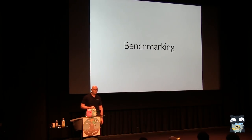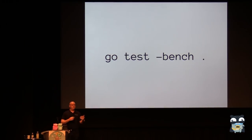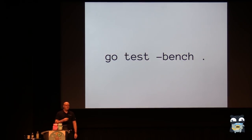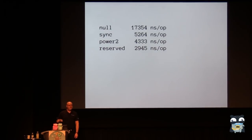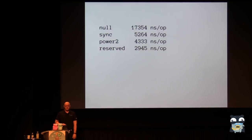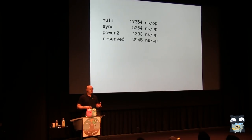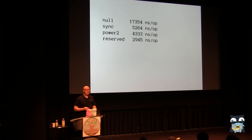For benchmarking, we run go test -bench with the package name. Not surprisingly, the null strategy is the worst — takes the longest per operation. Reserved is the best, with roughly an order of magnitude between top and bottom. Notably, all memory management strategies other than null are fairly close — maybe a factor of two between them — so any memory management strategy is better than none.